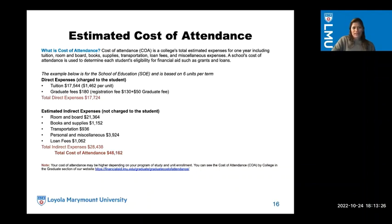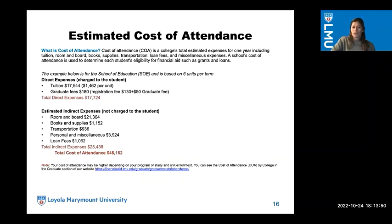Estimated cost of attendance — what is it? We call it COA. It's the college's total estimated expense for one year, including tuition, room and board, books and supplies, transportation, loan fees, and miscellaneous expenses. A school's cost of attendance is used to determine each student's eligibility for financial aid such as grants and loans. This example is for the School of Education based on six units per term. Direct expenses charged to the student: tuition and graduate fees total $17,724. Estimated indirect expenses — not charged to you — include room and board, books and supplies, transportation, personal and miscellaneous, and loan fees, totaling $28,238. In all, the total cost of attendance is $46,162.